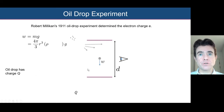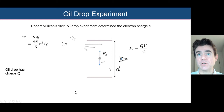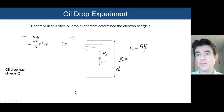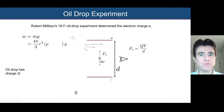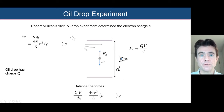The oil drop has picked up a charge — one, two, three, or four electrons — thanks to ionization of the surrounding air. With an electric field applied between the capacitor plates, the force is equal to the charge Q multiplied by the electric field, rewritten as voltage divided by distance d. If we manipulate the voltage such that the oil drop is stationary and suspended between the plates, we can equate the gravitational force with the electric field force: QV divided by d equals four-thirds pi r cubed times density times g.